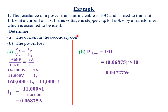To find the current in the secondary coil, we substitute: the voltage in the secondary coil is 160 kilovolts, and the voltage in the primary coil is 11 kilovolts, with the current in the primary coil given as 1 ampere. Converting to SI units: 160 kilovolts equals 160,000 volts, and 11 kilovolts equals 11,000 volts.